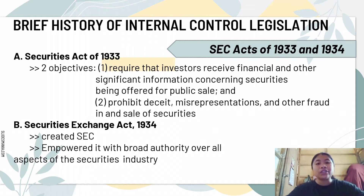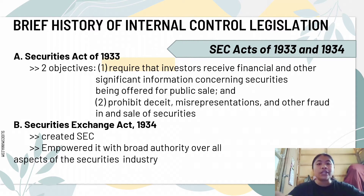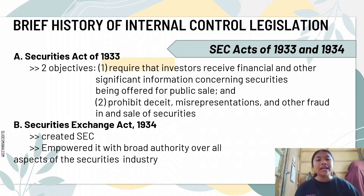Now let's look at the history of internal control. Following the crash of the stock market and widespread financial fraud, U.S. legislators passed two measures to restore confidence in the capital market. The first was the Securities Act of 1933, with two primary objectives: to require that investors receive financial and other significant information concerning securities being offered for public sale, and to prohibit deceit, misrepresentations, and other fraud in the sale of securities.